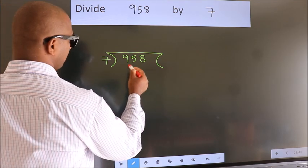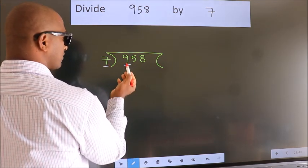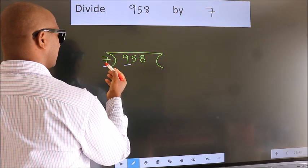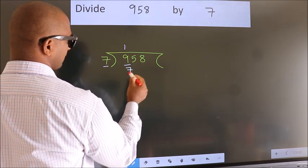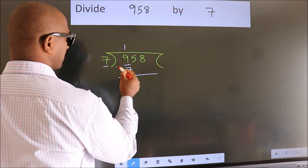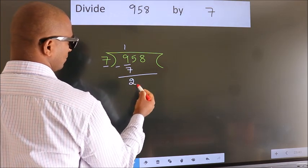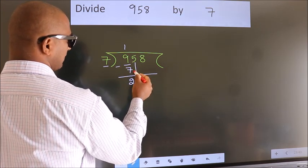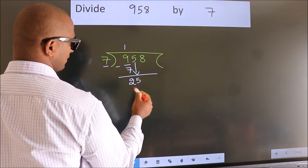Here we have 9, and here 7. A number close to 9 in the 7 times table is 7 once, which is 7. Now we subtract and we get 2. After this, bring down the beside number — so 5 comes down.